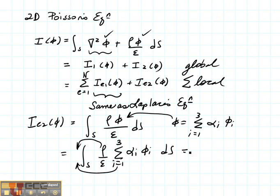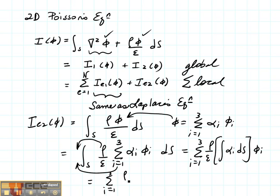And what we're going to be left with is the sum from I equals 1 to 3 of rho over epsilon and then this vector right here which is [1, 1, 1] times the area of our element times phi sub I.